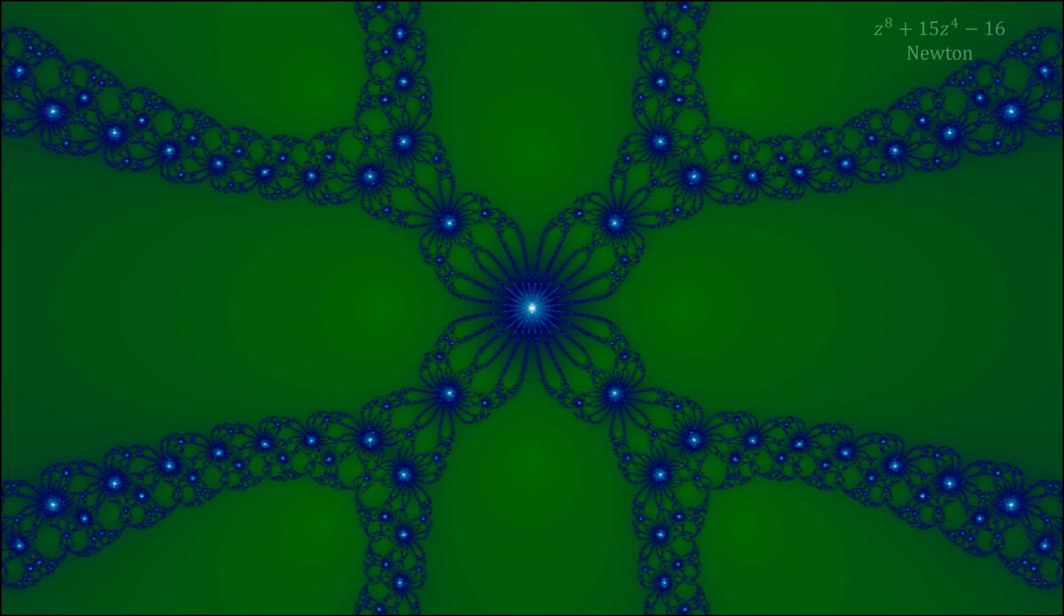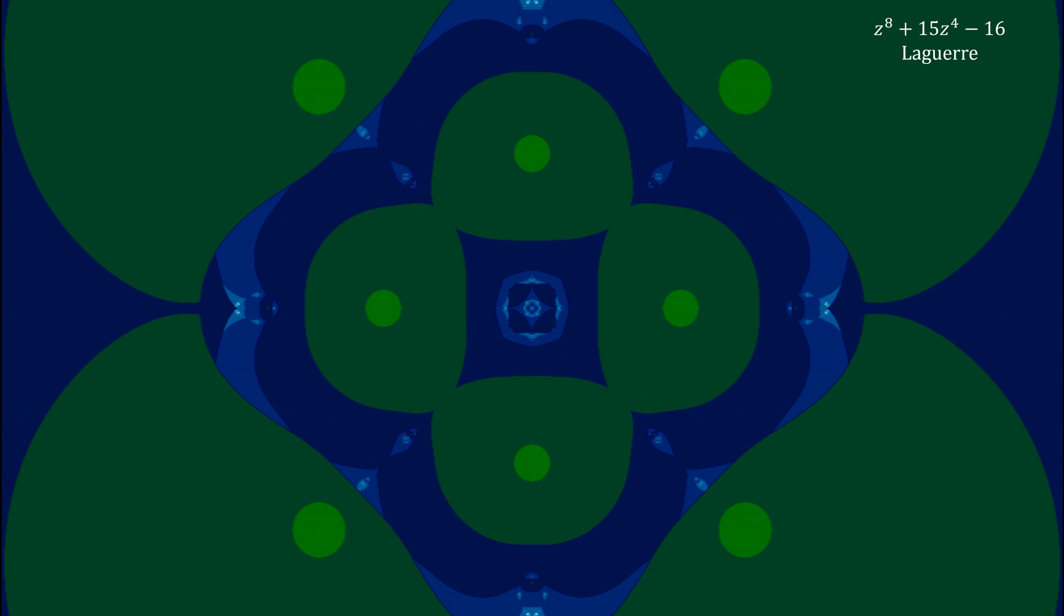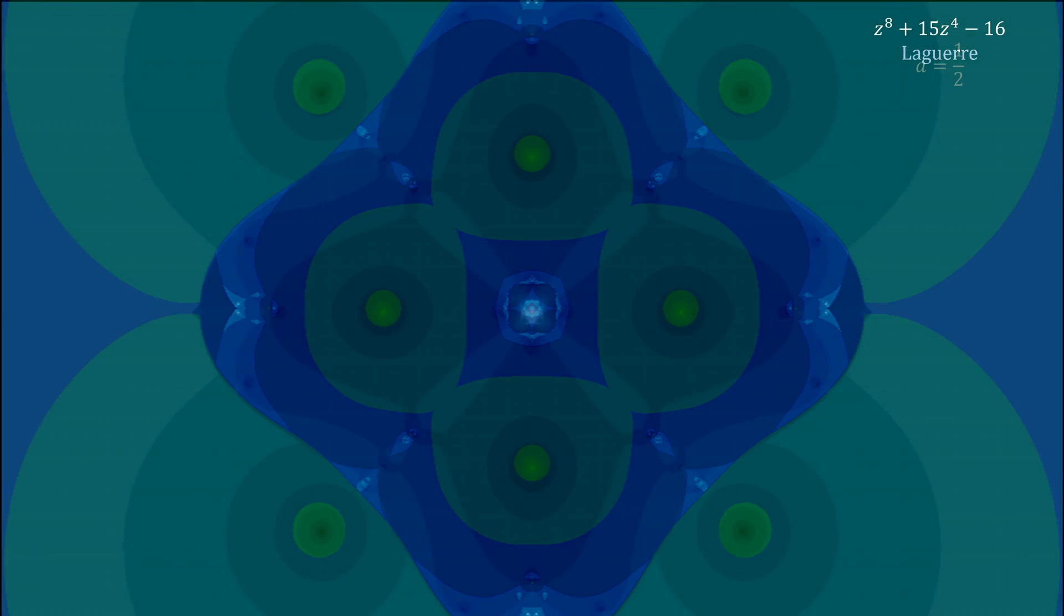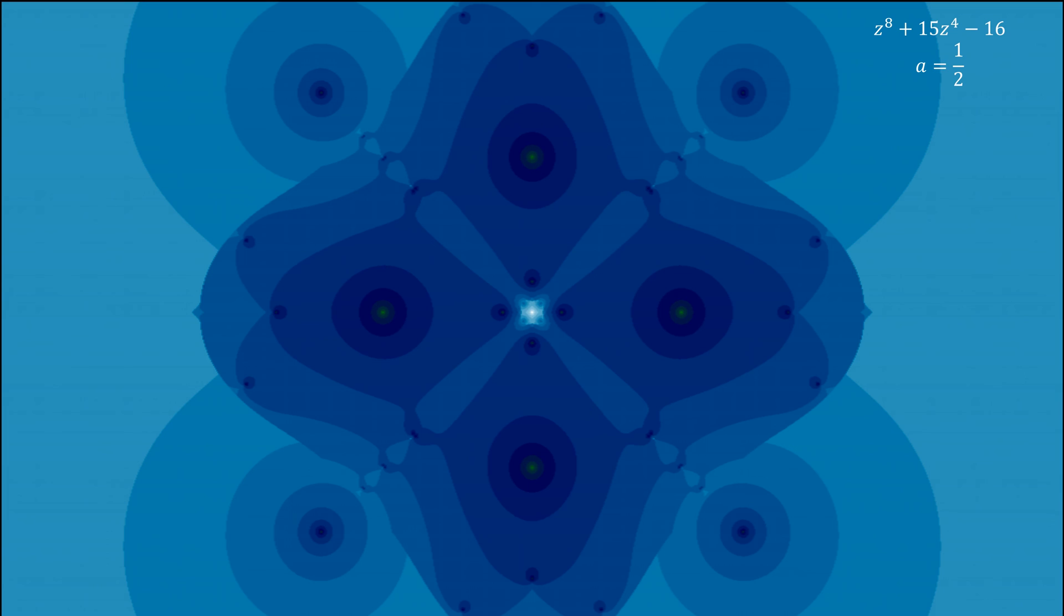Here is the Newton fractal for z to the 8th plus 15z to the 4th minus 16, and notice again the amount of extremum points that's causing Newton's method to diverge. This is in stark contrast to the Laguerre fractal, which has nowhere near as many extremum points and is converging everywhere very quickly.